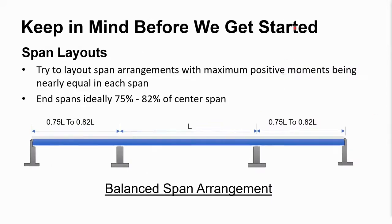Let's keep in mind just a few rudimentary things before we get started on the example. We want to idealize our continuous steel girders and balance the moments as much as possible. Our positive moment in the center span is going to equal our positive moment in our end spans, and generally that's about 0.75 to 0.82 of the center span length. Sometimes our project constraints can't do that, but in general, that's what we're aiming for.